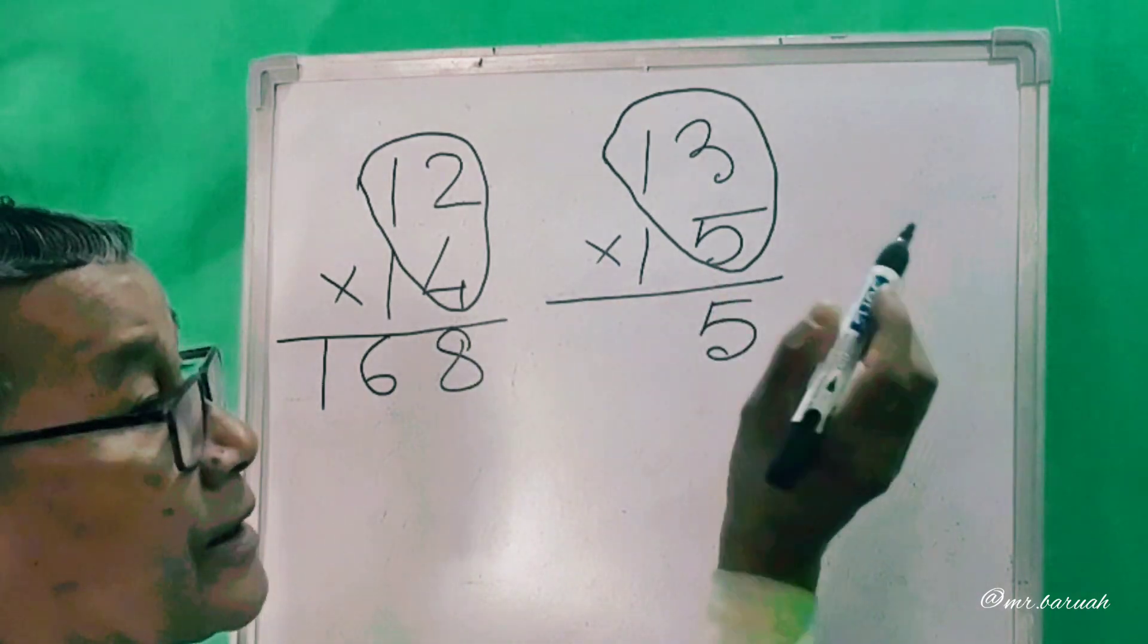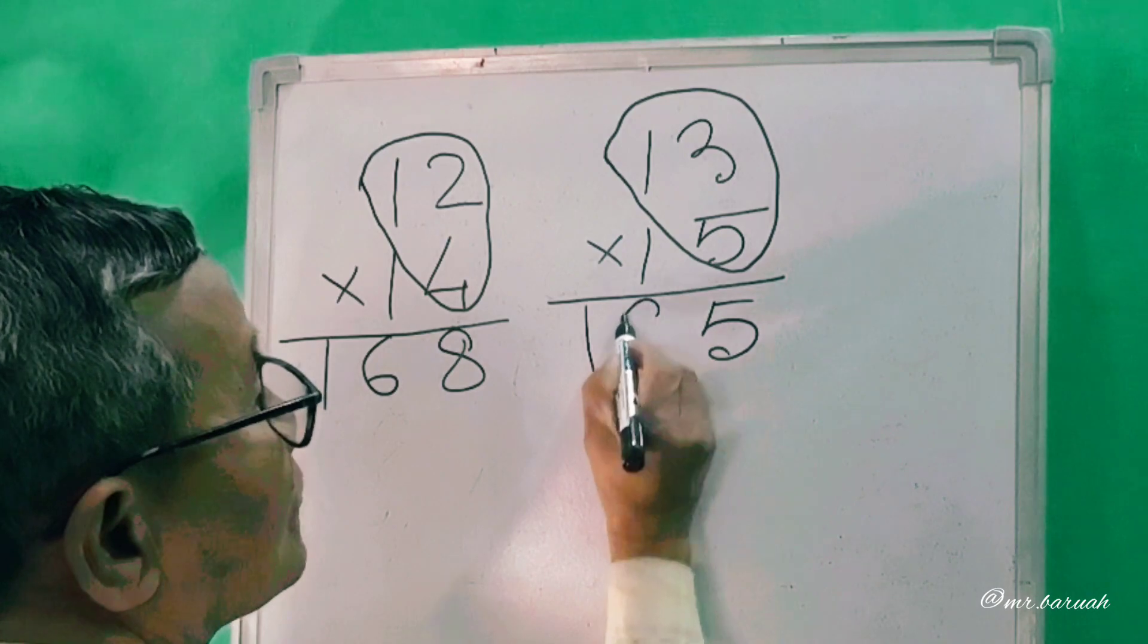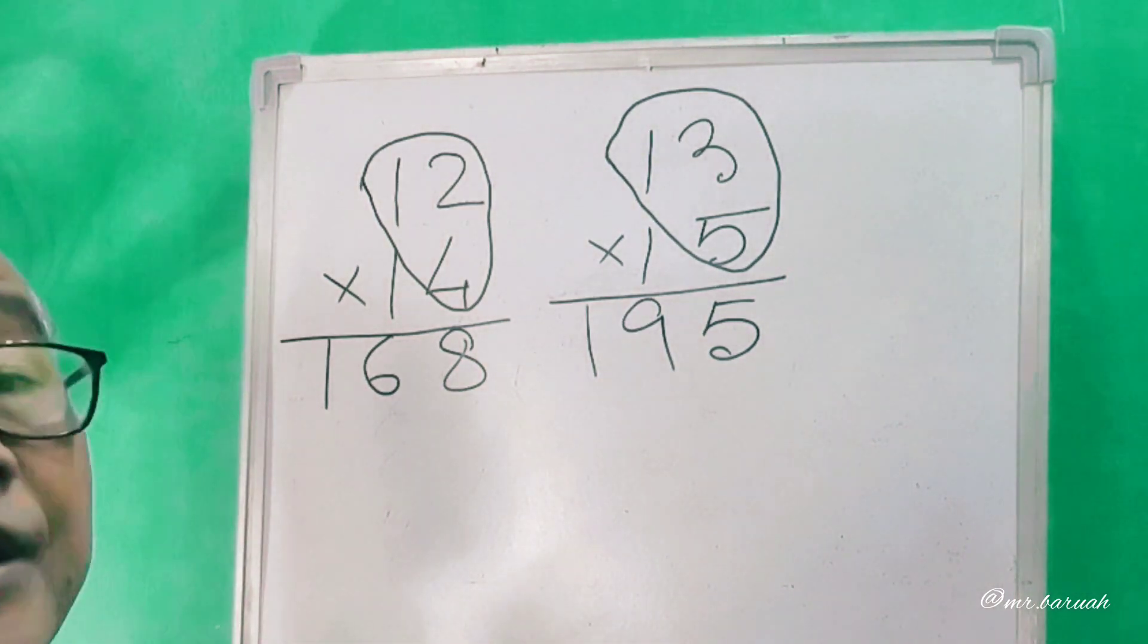18, 1 in hand, 19. 195. This is 13 into 15.